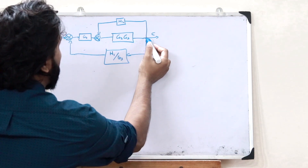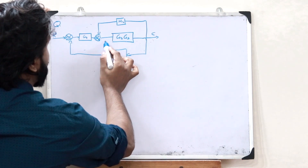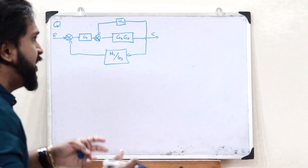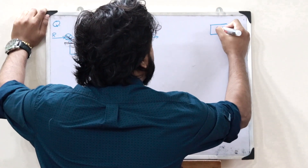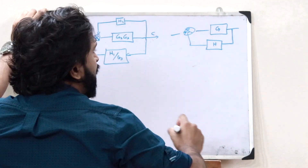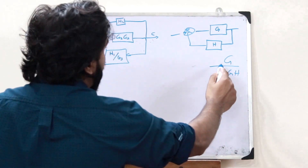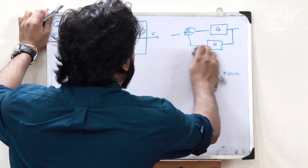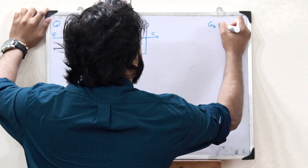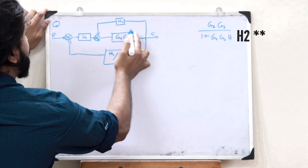Now we observe that G2G3 is the forward gain with a negative feedback of H2. We know that when a block G has a negative feedback H, the combined transfer function is G divided by 1 plus G·H. Applying this formula, the G2G3 loop with H2 becomes G2G3 divided by (1 + G2·G3·H2).